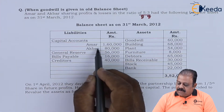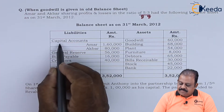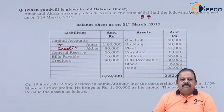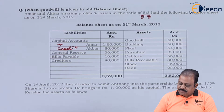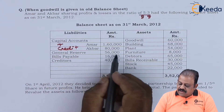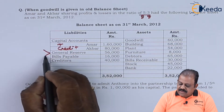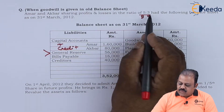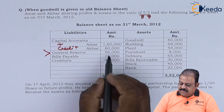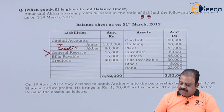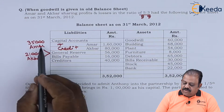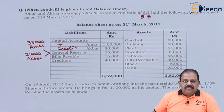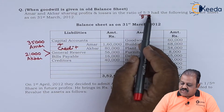Capital accounts of Amar and Akbar will be recorded to the credit of capital account by balance brought down. General reserve of 56,000 will be divided among old partners in the ratio of 5 is to 3. 35,000 will be given to Amar and 21,000 to Akbar.